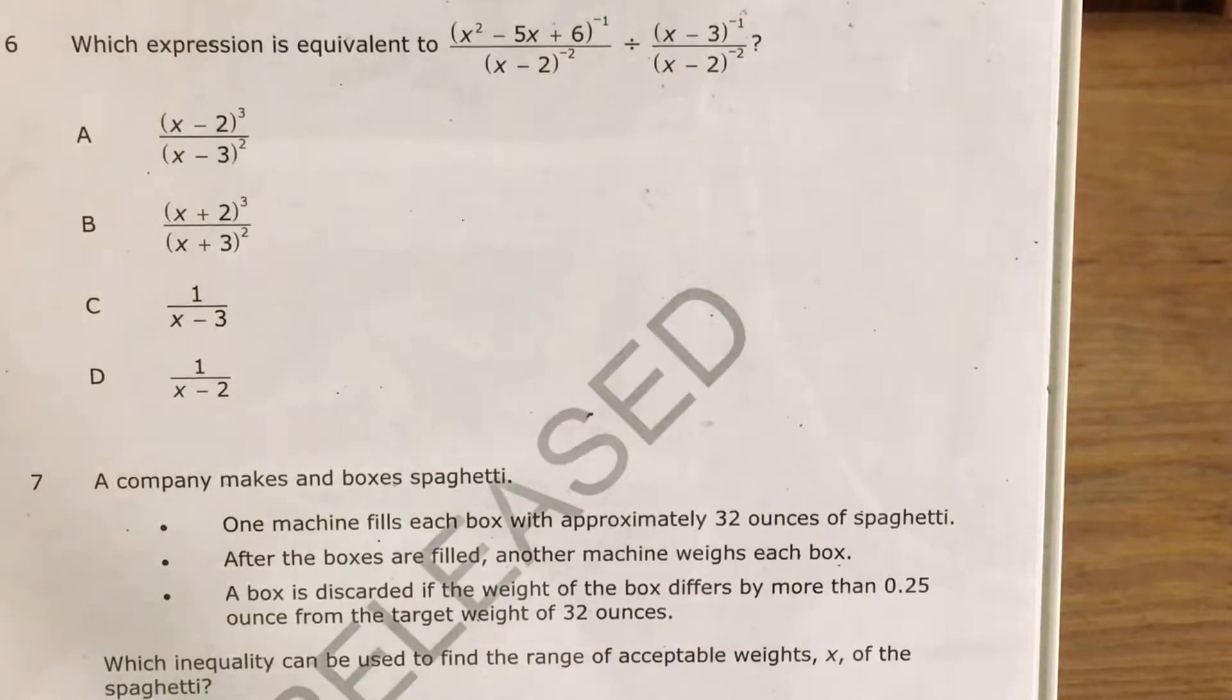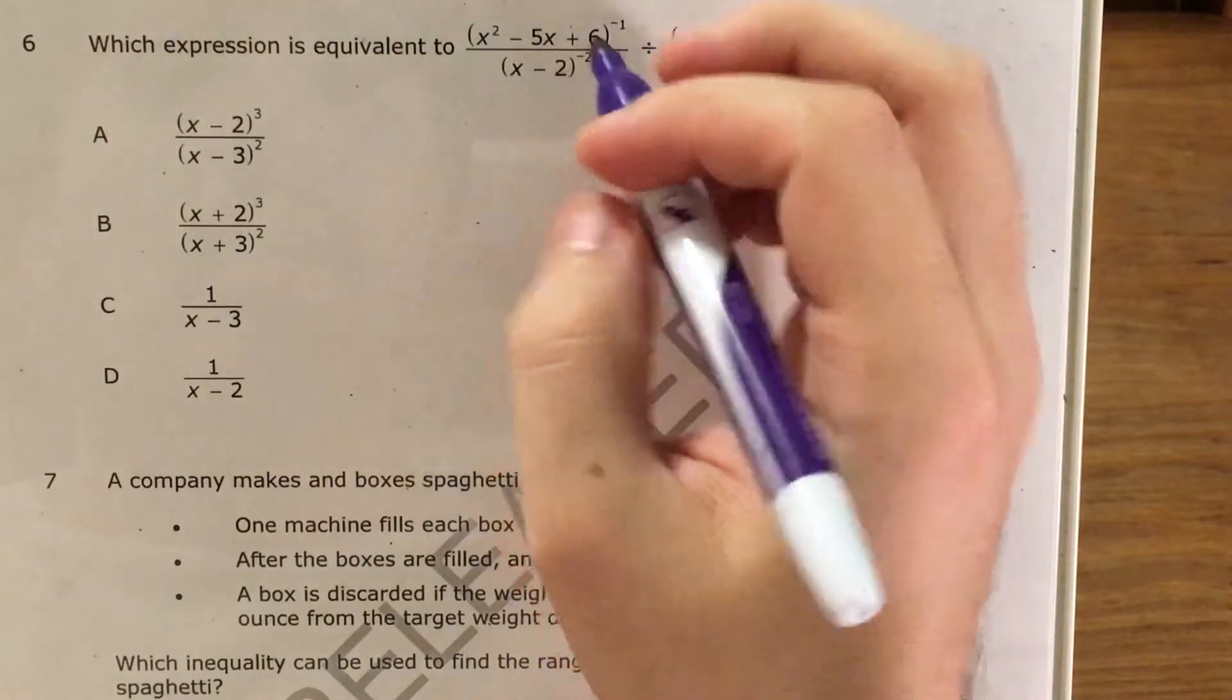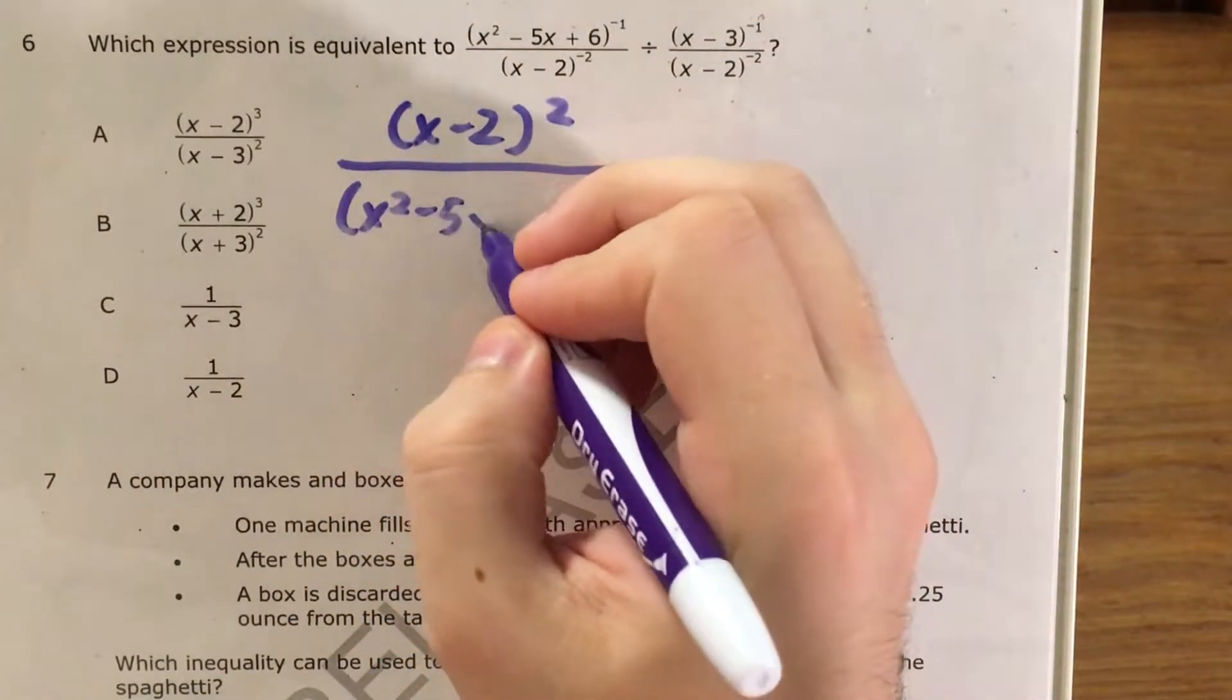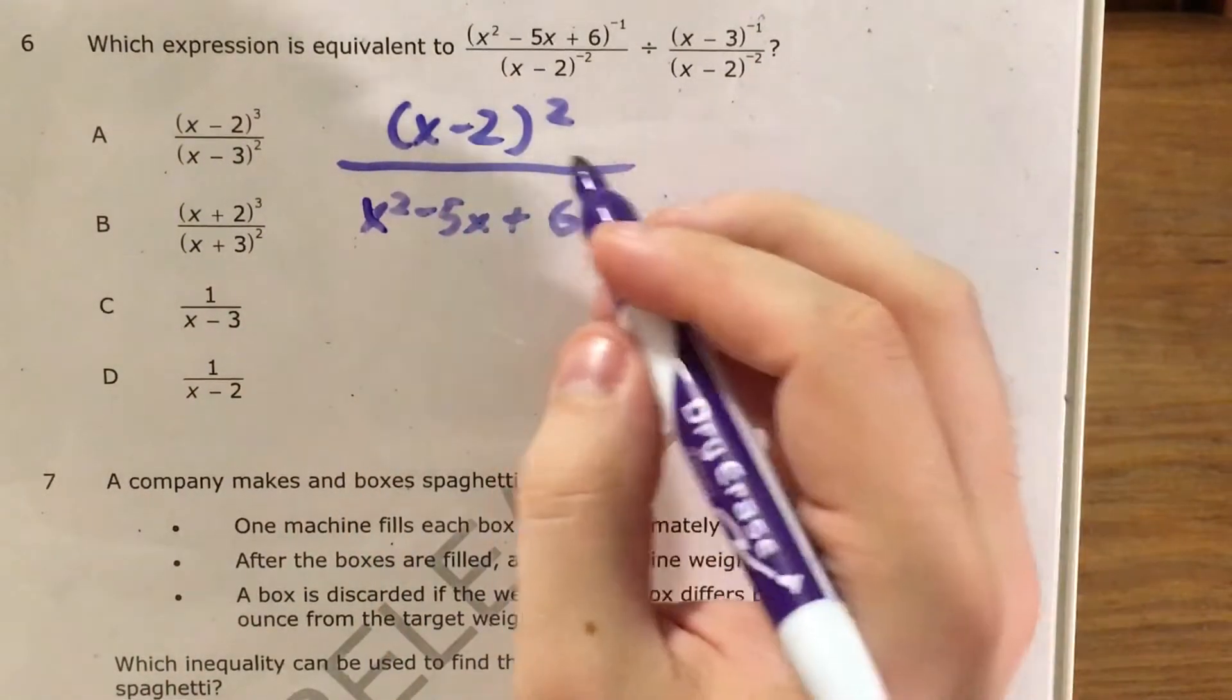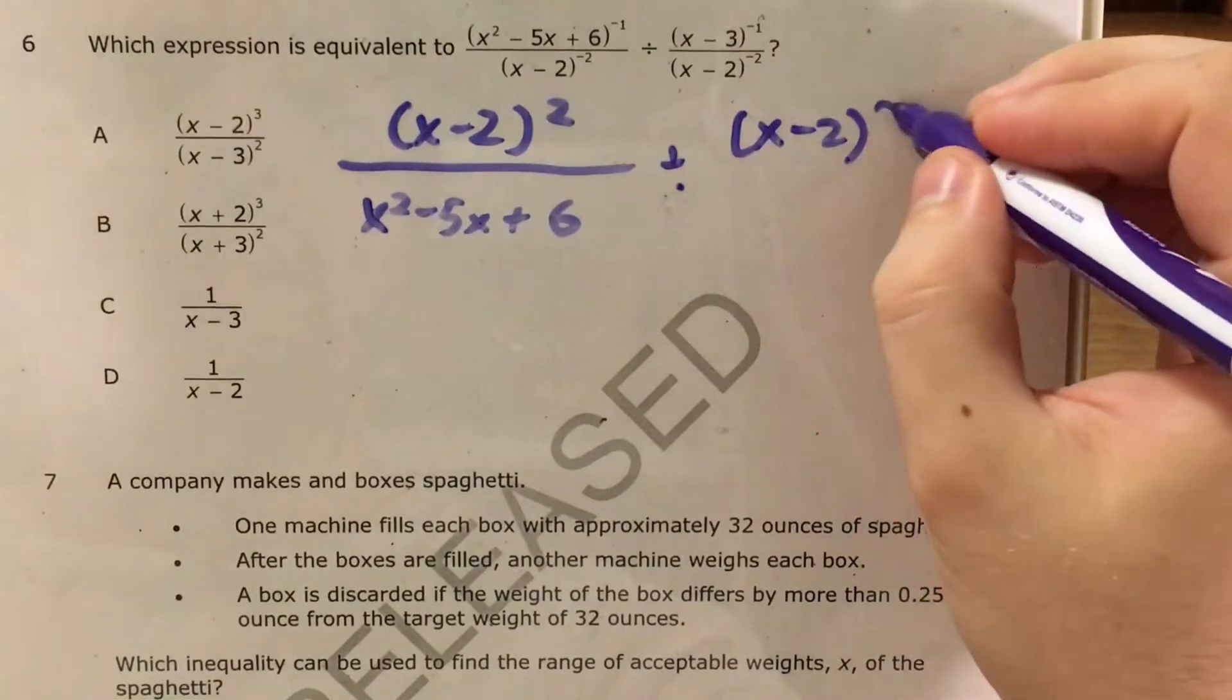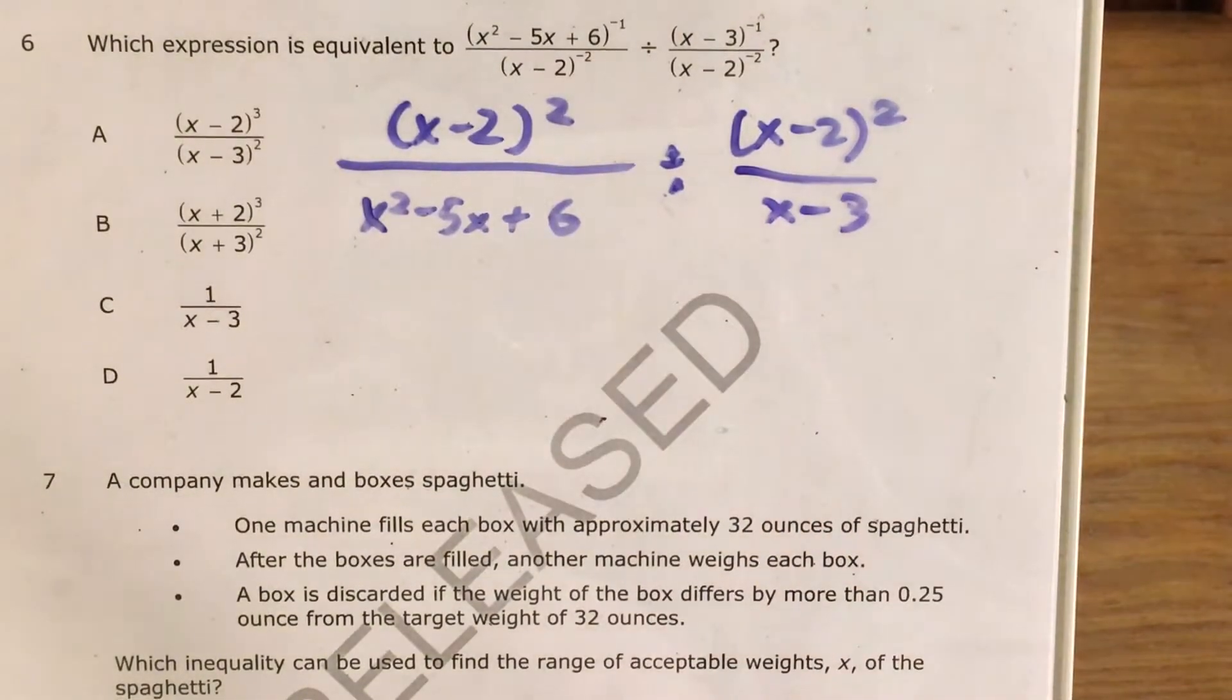So I'm gonna go ahead and do that with these two fractions so we can go ahead and get through this dividing mess. Now this fraction has x minus 2 all squared in its numerator and then x squared minus 5x plus 6 to the first power, so that's just leaving this the same in its denominator. And we're still dividing it, but now this is by x minus 2 all squared over x minus 3. So now this looks a lot more like a problem that we can deal with.